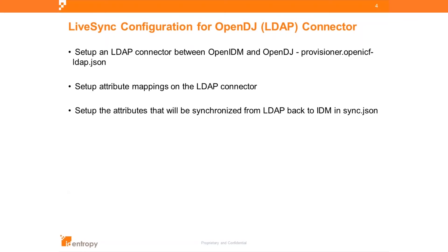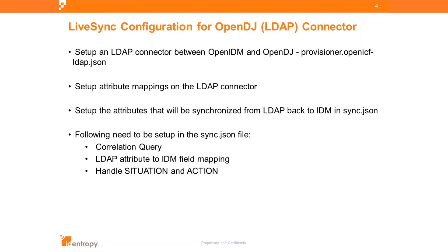The setup of attributes that will be synchronized from LDAP back to IDM can further be restricted in sync.json. The sync.json is a very involved file — it is the core of what gets synced back to IDM and how it gets synced. For example, you might have 10 fields in your user object from your directory, but in your sync.json mappings you can specify only three fields to sync in every LiveSync. You can also set up the correlation query, each LDAP attribute to IDM field mapping, and how you handle situations and their corresponding actions.